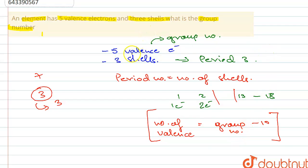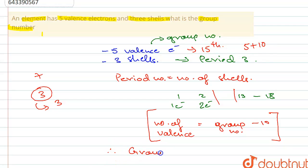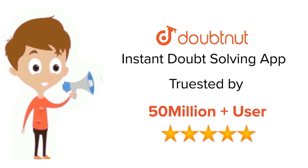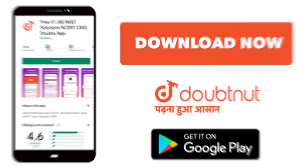Since the number of valence electrons given is 5, the group number will be 5 + 10 = group 15. So this element belongs to group 15. That was the answer for the question. Thank you.